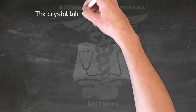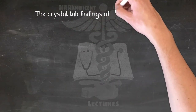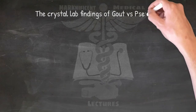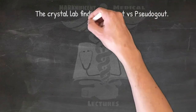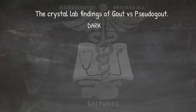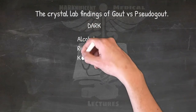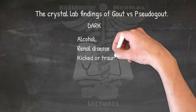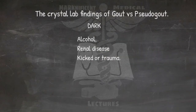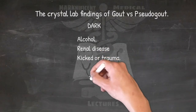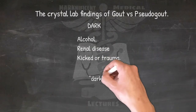The crystal lab findings of gout versus pseudogout: DARK — Alcohol, Renal disease, and Click or Trauma. The attack occurs most often at night, thus DARK.